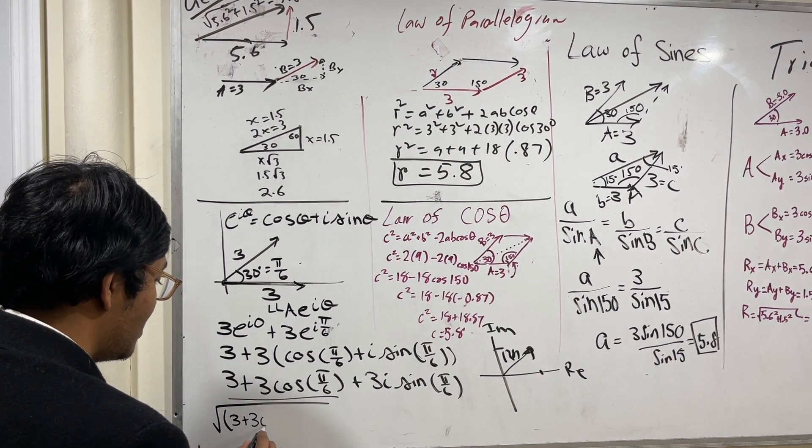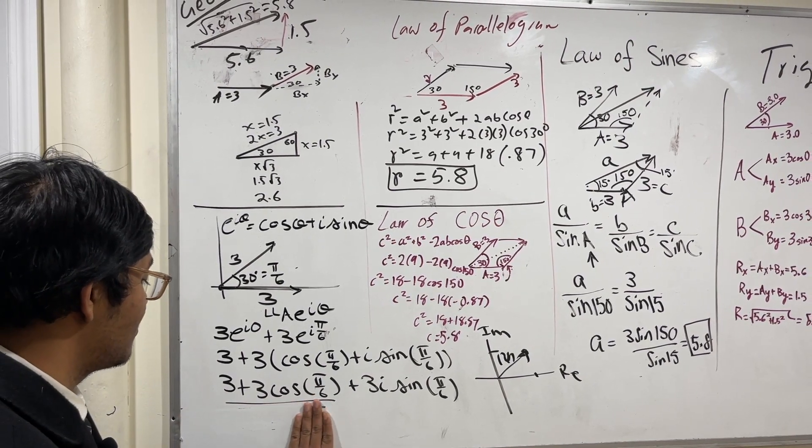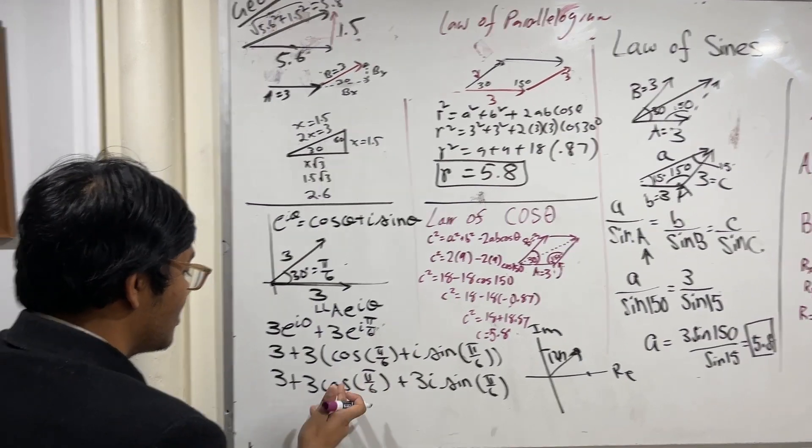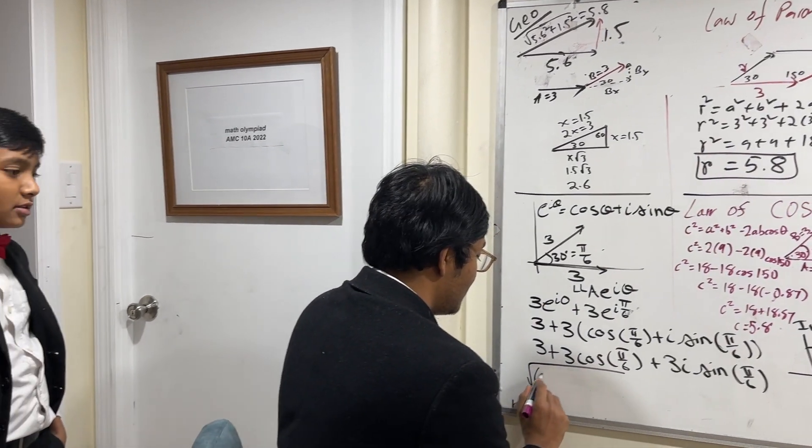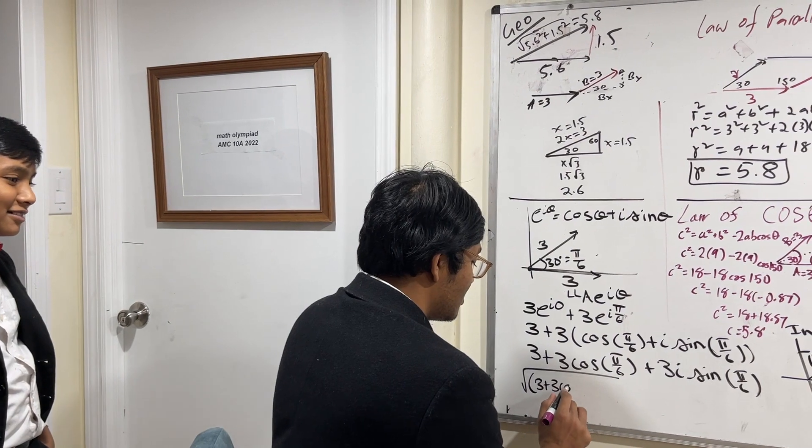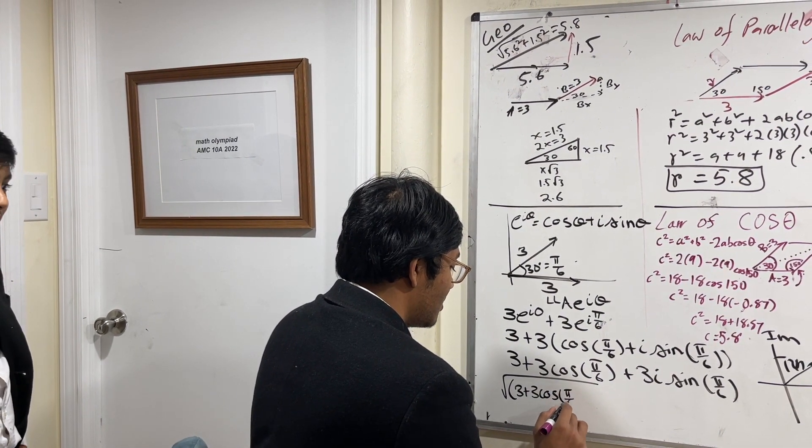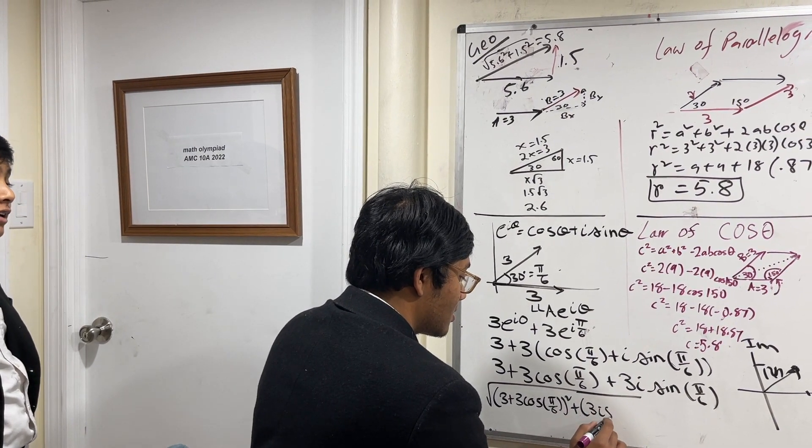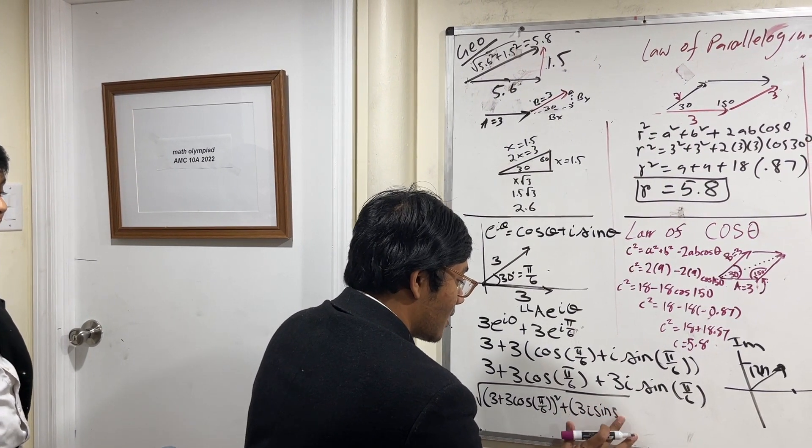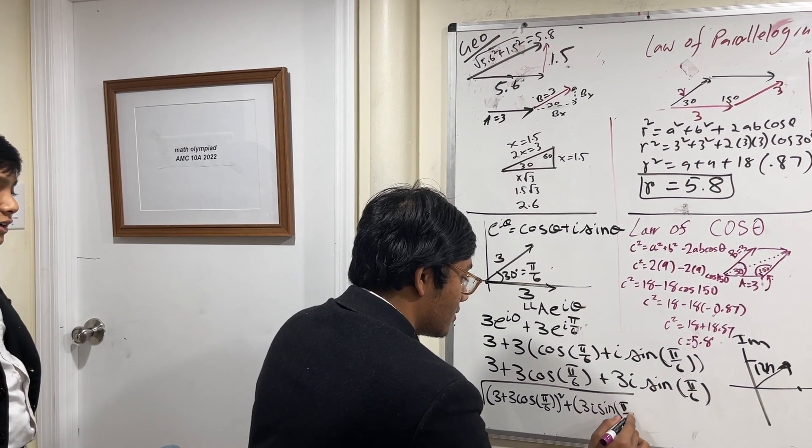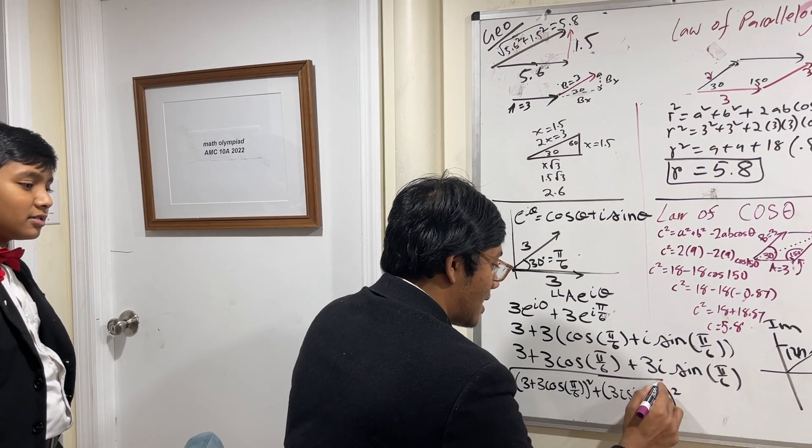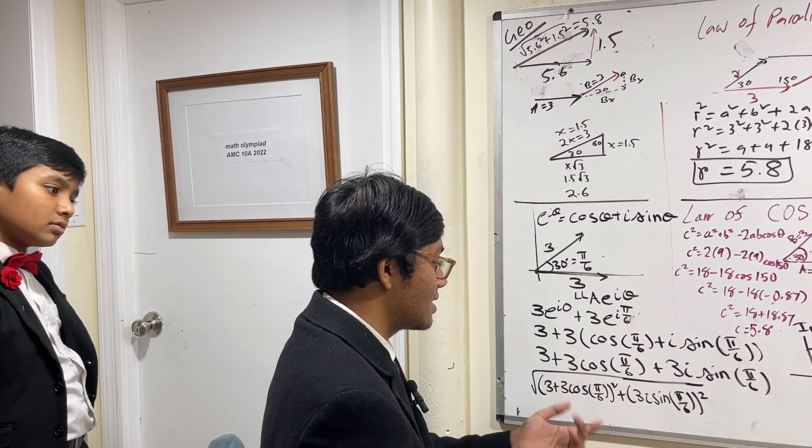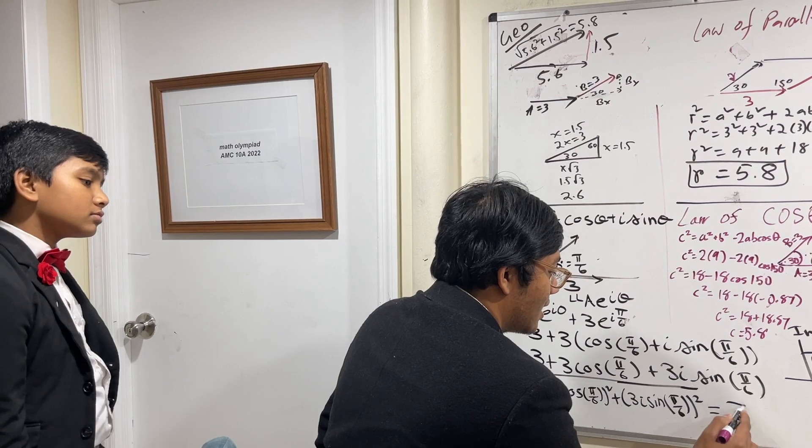And to find the magnitude of this complex vector, all we have to do is find its modulus. So we're going to find the magnitude of this imaginary vector. 3 plus 3 cosine. Well, what is cosine pi over 6? Cosine pi over 6 is... So you can plug that in. Magnitude of the x component squared plus magnitude of the y component squared. And now you can see that the i doesn't matter anymore. Because after you square it, it becomes negative 1. It will take some away from here, and it will end up with 5.8.